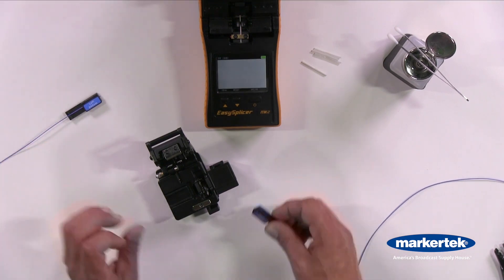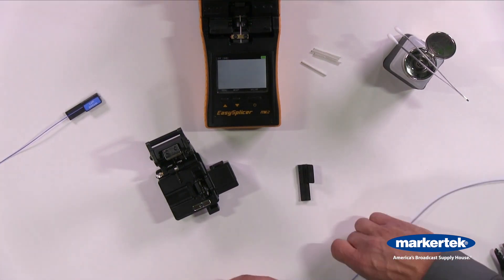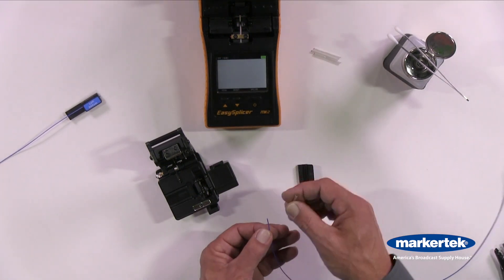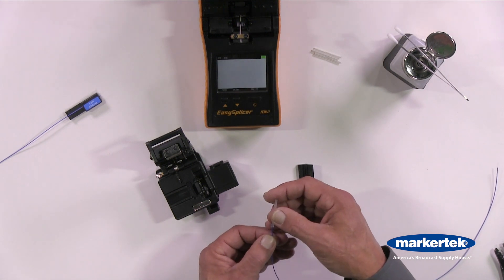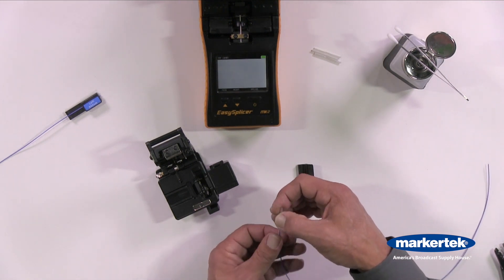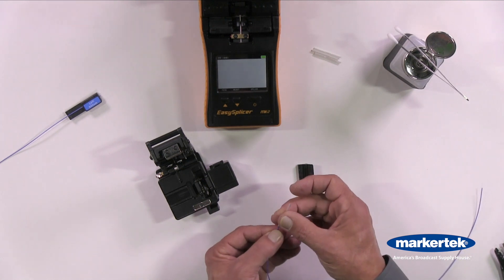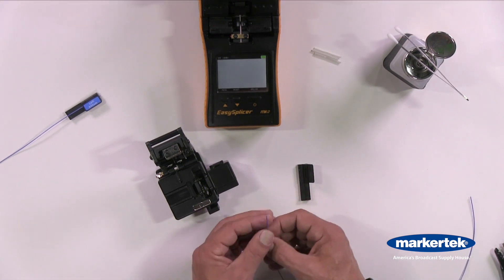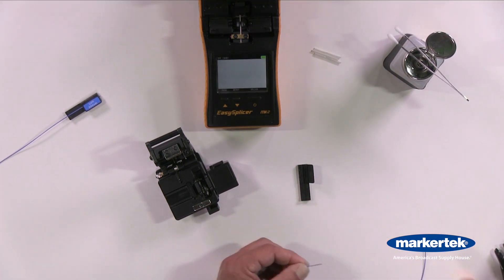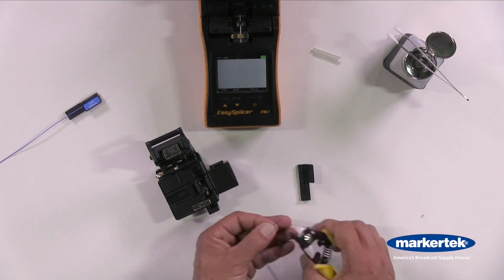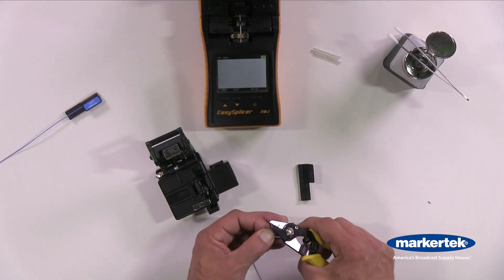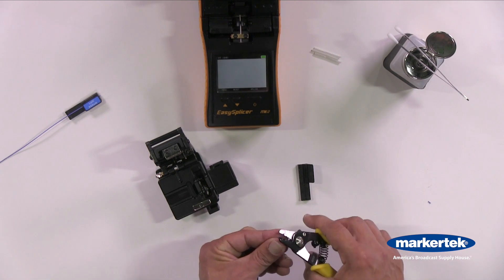Set that one aside. We'll prepare the right side. At this point you're going to want to put on your fusion protective sleeve and start with the 900 micron coating.